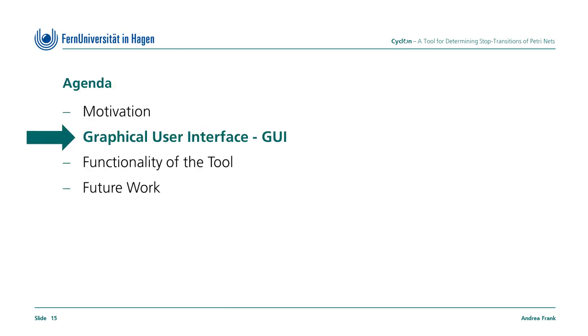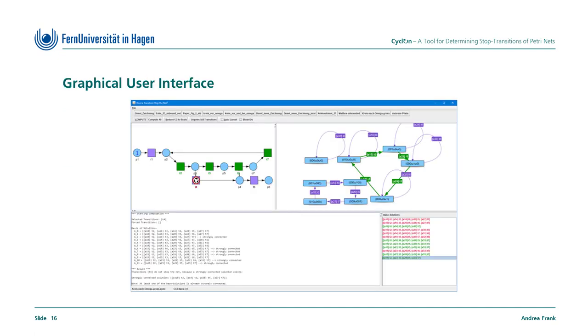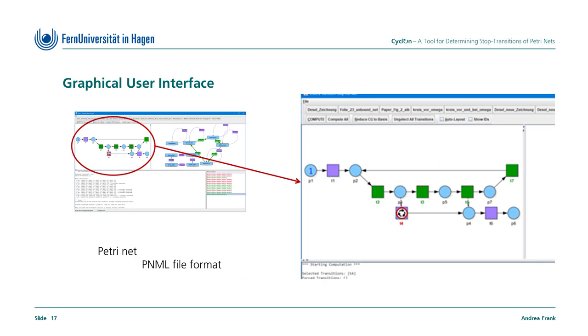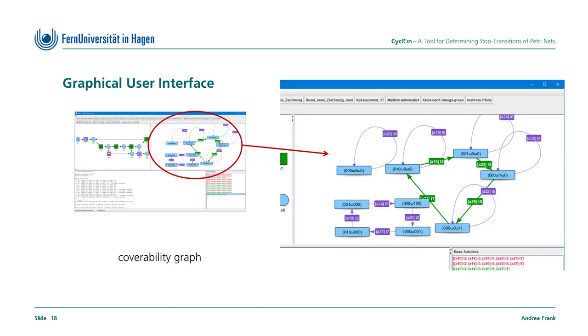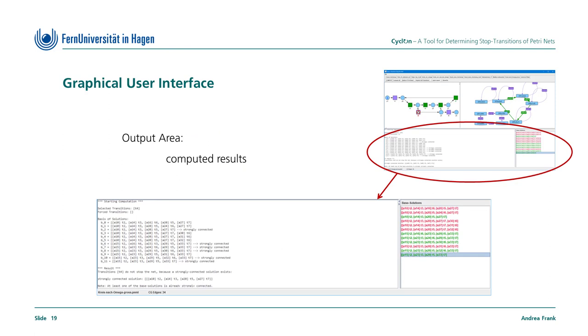In the next section, I'd like to give you a short overview of the graphical user interface. The main window of the tool is divided into four areas. The Petri Nets that you want to examine must be in PNML file format. After opening a PNML file, the specified Petri Net is displayed in the upper left. Furthermore, Cyclone computes a coverability graph of the Petri Net and displays it in the window at the upper right. You can start the various calculations using the compute buttons. I will tell you more about this later. At this point, I would just like to show that the results of the computations are displayed in the lower area of the mainframe.